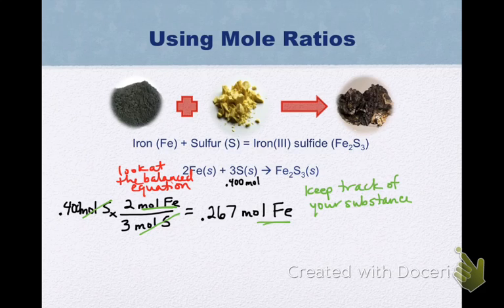We can also use this to figure out how much iron 3 sulfide can be made. So once again, 0.4 moles of sulfur. Getting rid of sulfur. Once again, look at the balanced equation. There's a 3 in front of sulfur. So 3 moles of sulfur reacts to form 1 mole of iron 3 sulfide. So I have a different mole ratio here because I'm comparing different substances. These numbers are not coming from any fancy place other than the chemical equation.